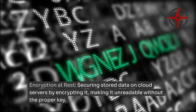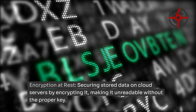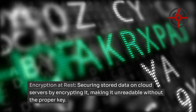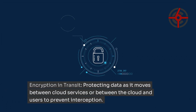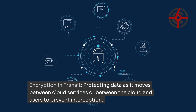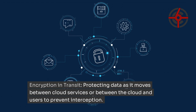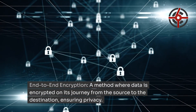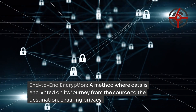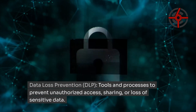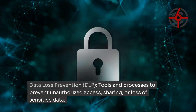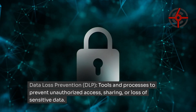Encryption at rest: securing stored data on cloud servers by encrypting it, making it unreadable without the proper key. Encryption in transit: protecting data as it moves between cloud services or between the cloud and users to prevent interception. End-to-end encryption: a method where data is encrypted on its journey from the source to the destination, ensuring privacy. Data Loss Prevention (DLP): tools and processes to prevent unauthorized access, sharing, or loss of sensitive data.